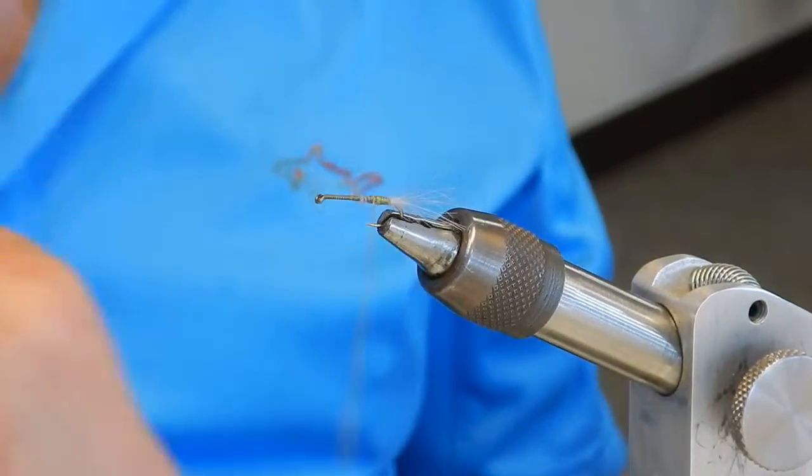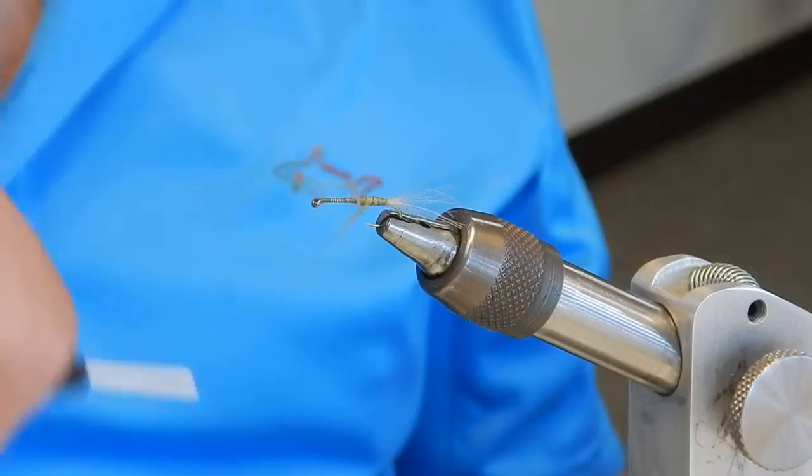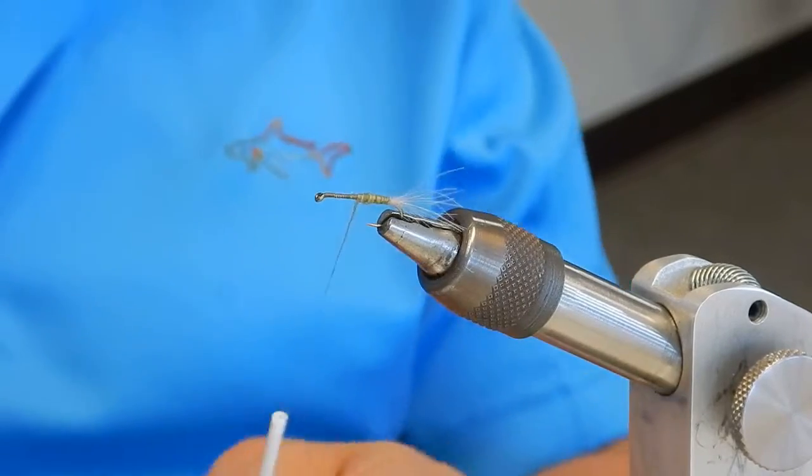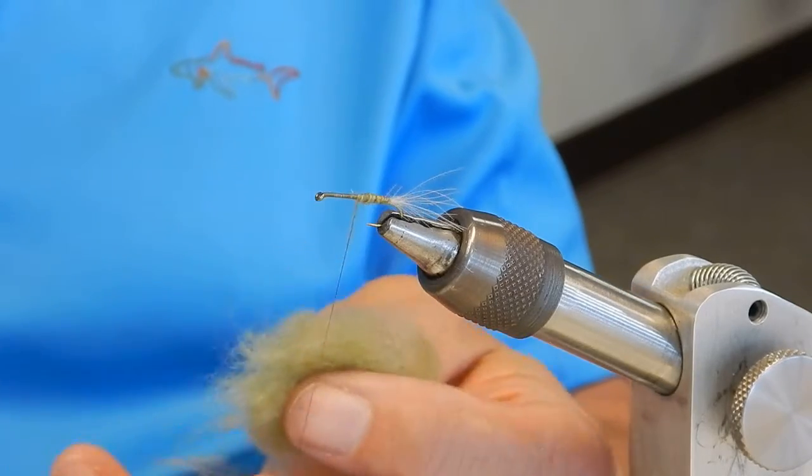A lot of commercial flies you buy, you see, they just have kind of flat, straight bodies. And while it may or may not make a difference, I like to tie in a nice taper on all of them.